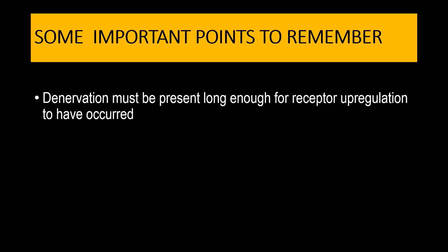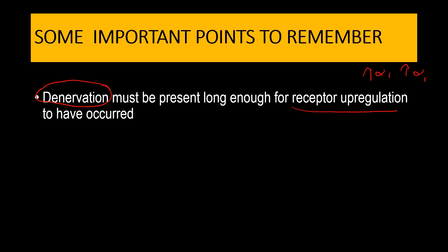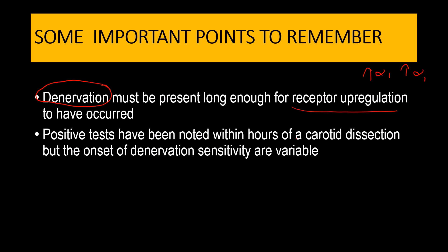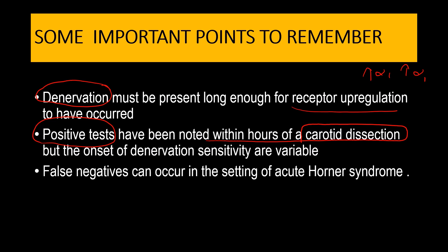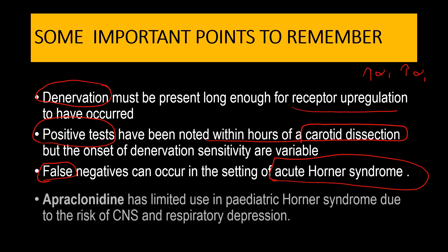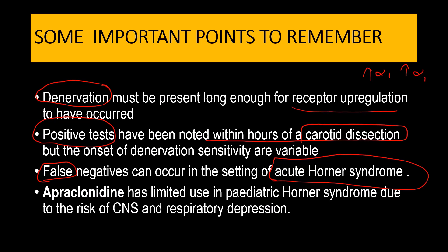Important points to remember: the denervation must be present long enough for receptor upregulation to occur. However, positive tests have been observed even within a few hours of carotid dissection. In acute Horner syndrome, the apraclonidine test may be negative because receptor upregulation has not yet occurred. Additionally, apraclonidine should not be used in pediatric Horner syndrome because it carries a risk of CNS and respiratory depression.